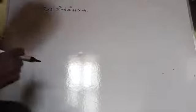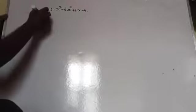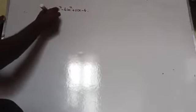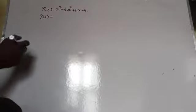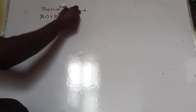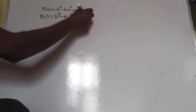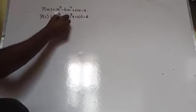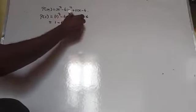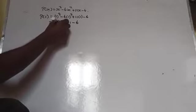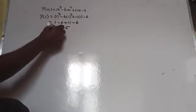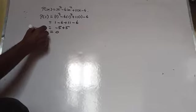First, we will find one factor by using the trial and error method. Find P(1) — replace x by 1 everywhere in the given polynomial. Then 1³ - 6(1²) + 11(1) - 6, that means 1 - 6 + 11 - 6. 1 - 6 is -5, and 11 - 6 is +5, so -5 + 5 = 0.